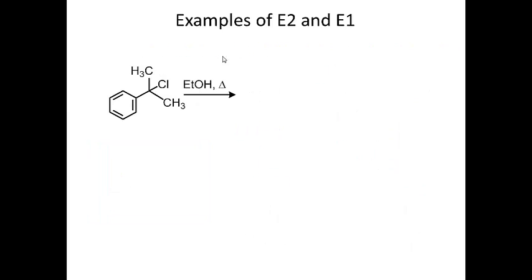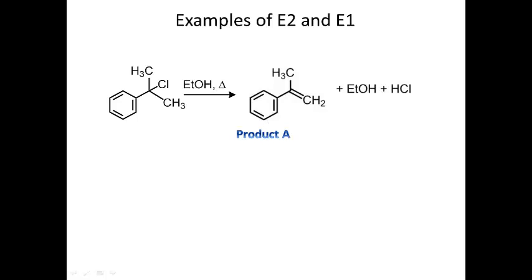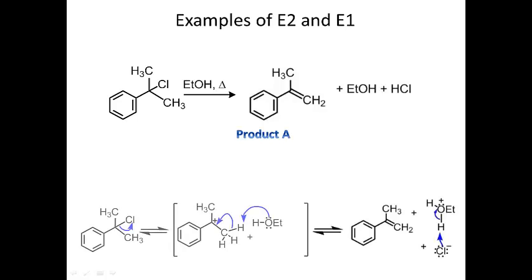Let's look at an example of E1. We have this molecule — we're just warming it up in ethanol and we get product A, plus ethanol, plus HCl. The first step in the E1 is just like the first step in SN1: you lose your leaving group, you generate a carbocation intermediate, and then ethanol comes in to deprotonate the intermediate via proton transfer. These electrons come in to make the pi bond, which is shown here as the product.